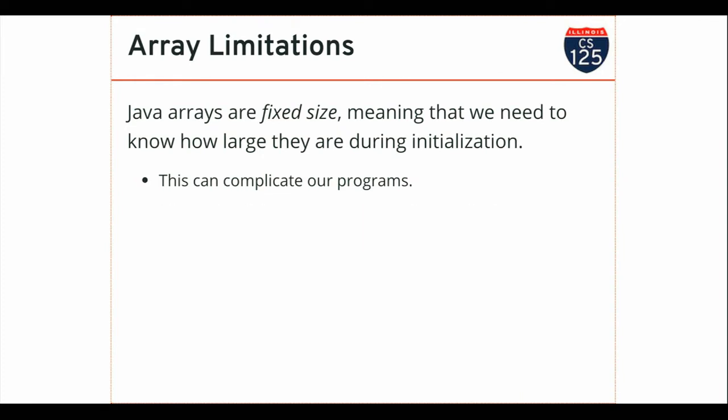If I want to put more things in the array, I have to create a new array, copy the old stuff over, and work from there — but I can't change the size of the original array. This can complicate our programs, and that's why Java has similar data structures to lists that exist in other languages like Python, which we'll talk about later in the semester. It also has some interesting historical consequences. Fixed-size arrays — so how many people have a net ID that ends with the number two? How about three? Four? Who's got one higher than ten? Higher than twenty? Higher than thirty? Higher than forty? Seventy-four!